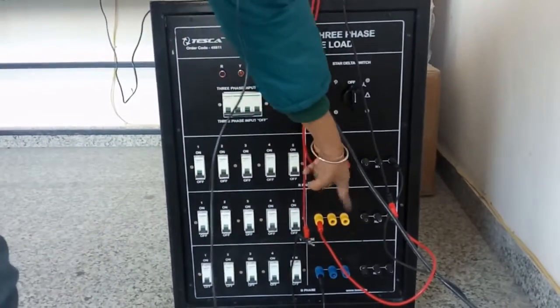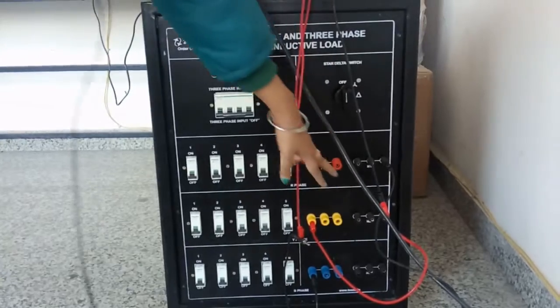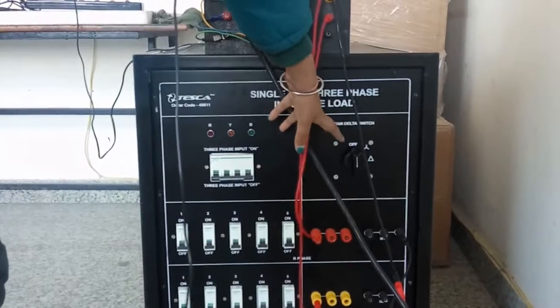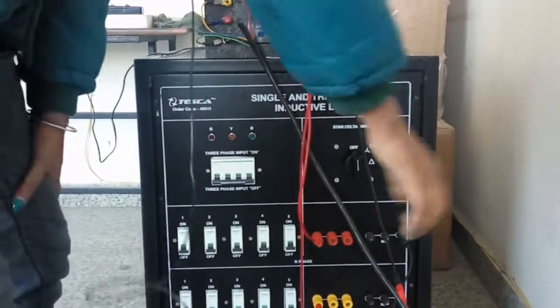These are the neutrals. The neutrals are internally connected, so we can use any neutral. This is the data collector switch. With this switch, we can select star connection or delta connection.